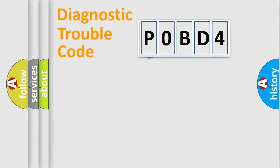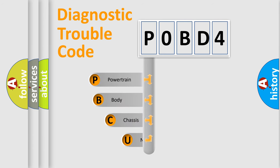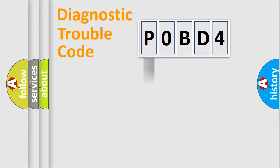First, let's look at the history of diagnostic fault code composition according to the OBD-2 protocol, which is unified for all automakers since 2000. We divide the electrical system of the automobile into four basic units: powertrain, body, chassis, and network. This distribution is defined in the first character of the code.